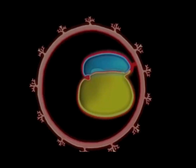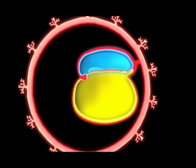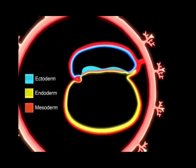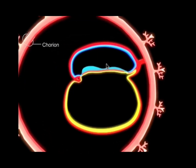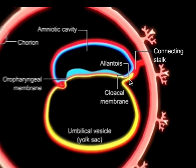Our story of gut tube formation begins with the very important milestone of embryonic folding. For orientation, let's first take a look at the embryo during longitudinal folding in week four. You can see here the amniotic cavity dorsally, the yolk sac ventrally, oropharyngeal membrane cranially, and cloacal membrane caudally.